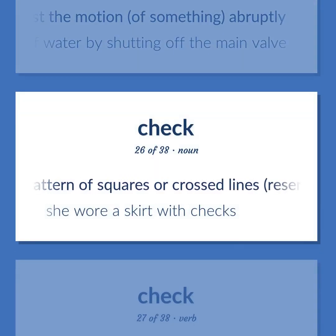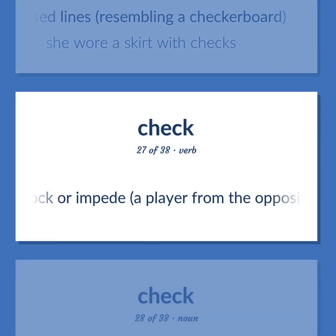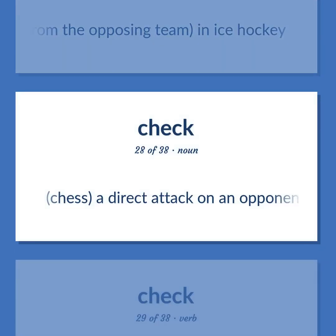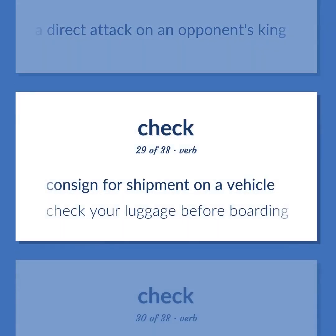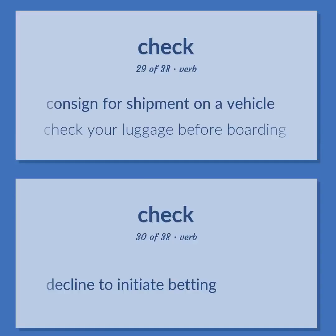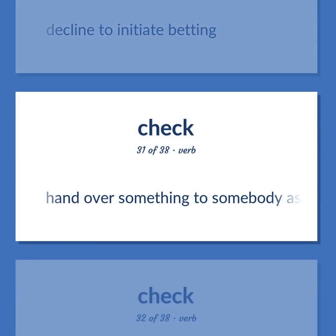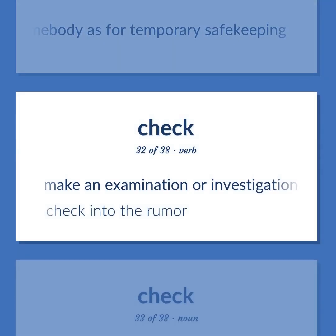A textile pattern of squares or crossed lines, resembling a checkerboard: she wore a skirt with checks. Block or impede a player from the opposing team, in ice hockey. Chess: a direct attack on an opponent's king. Consign for shipment on a vehicle: check your luggage before boarding. Decline to initiate betting. Hand over something to somebody as for temporary safekeeping. Make an examination or investigation: check into the rumor.